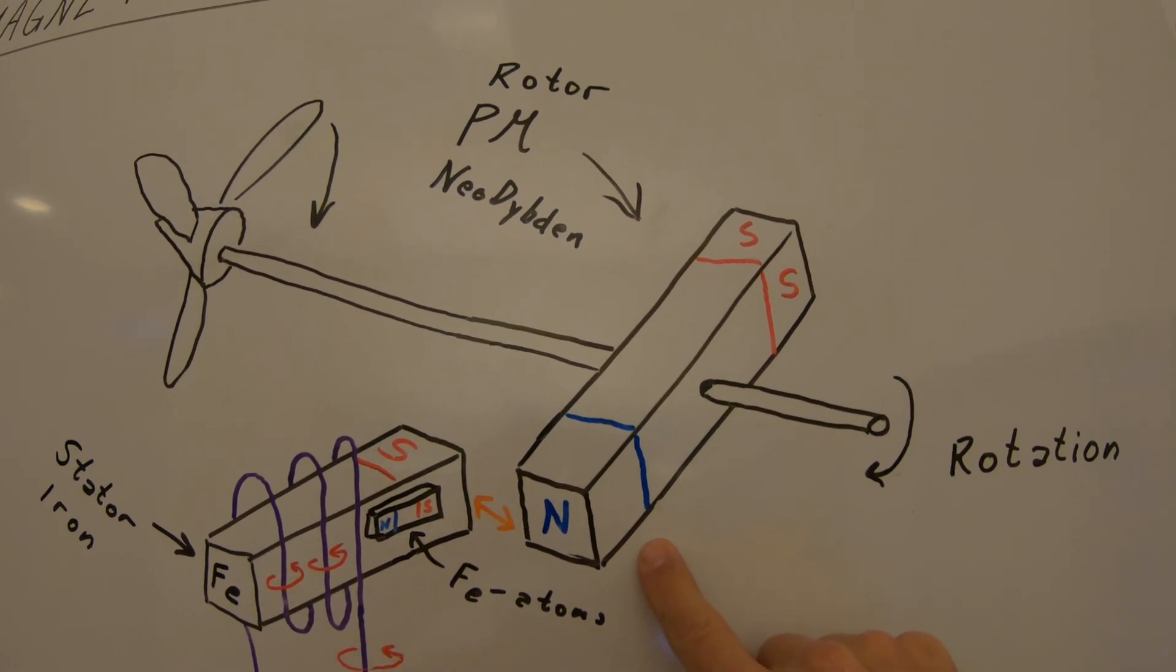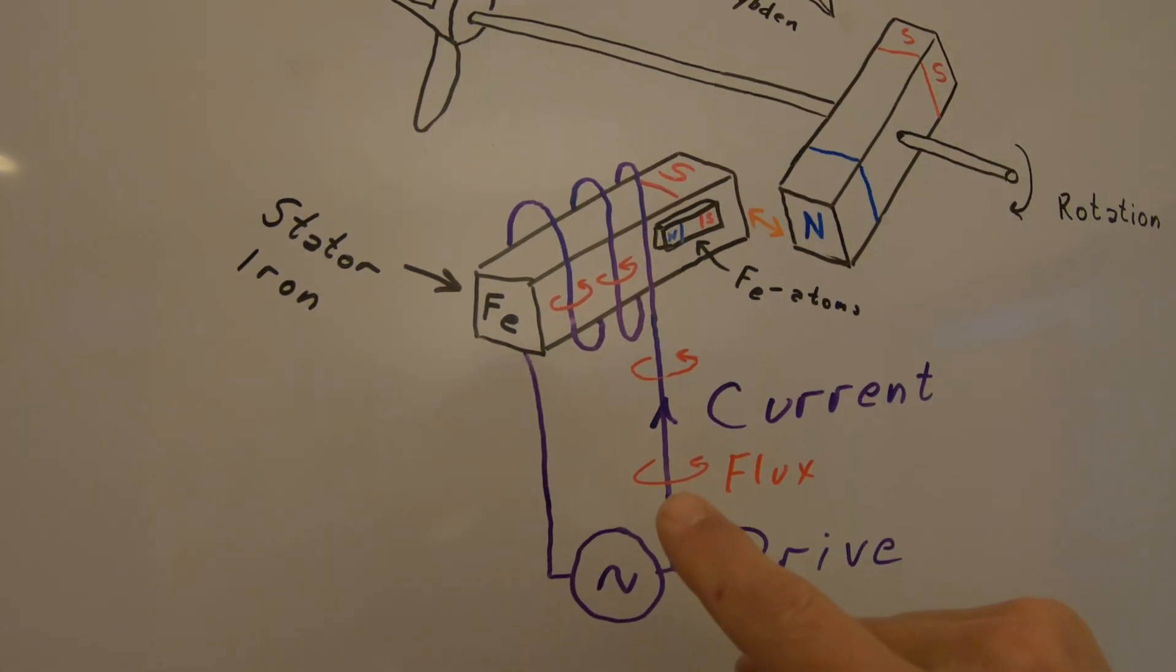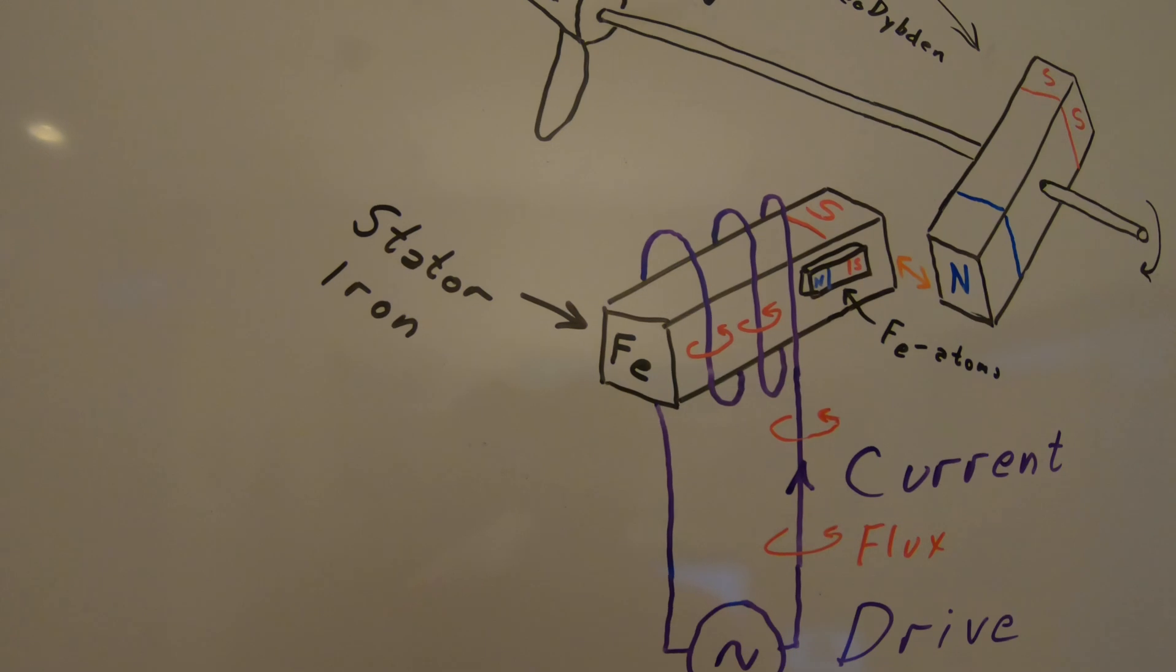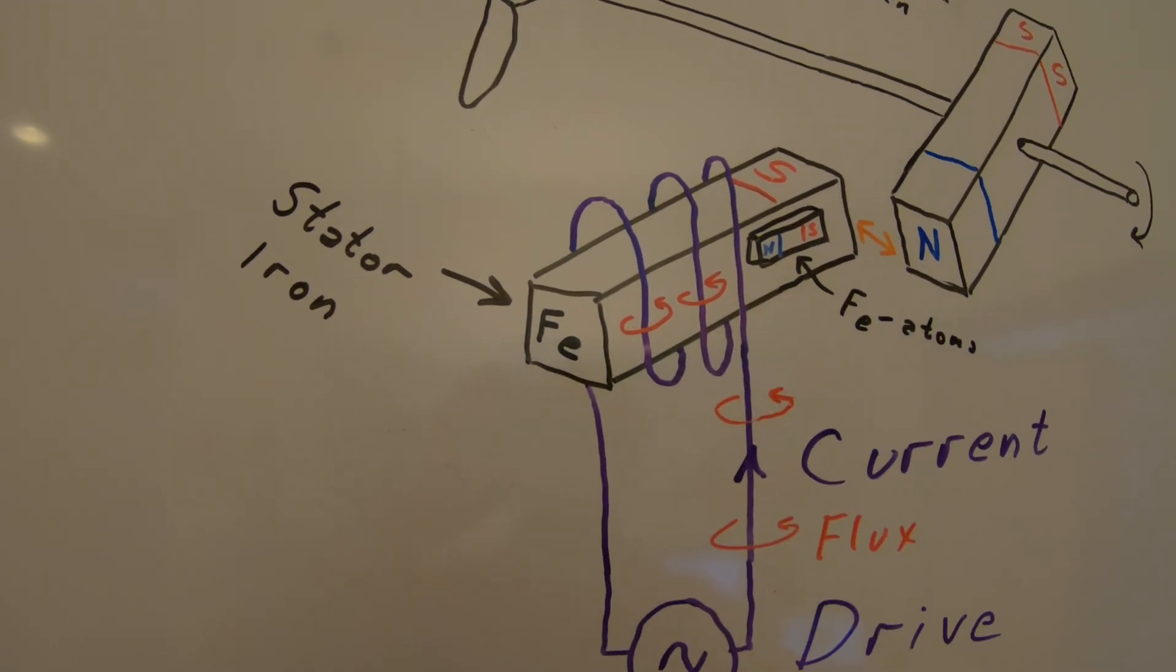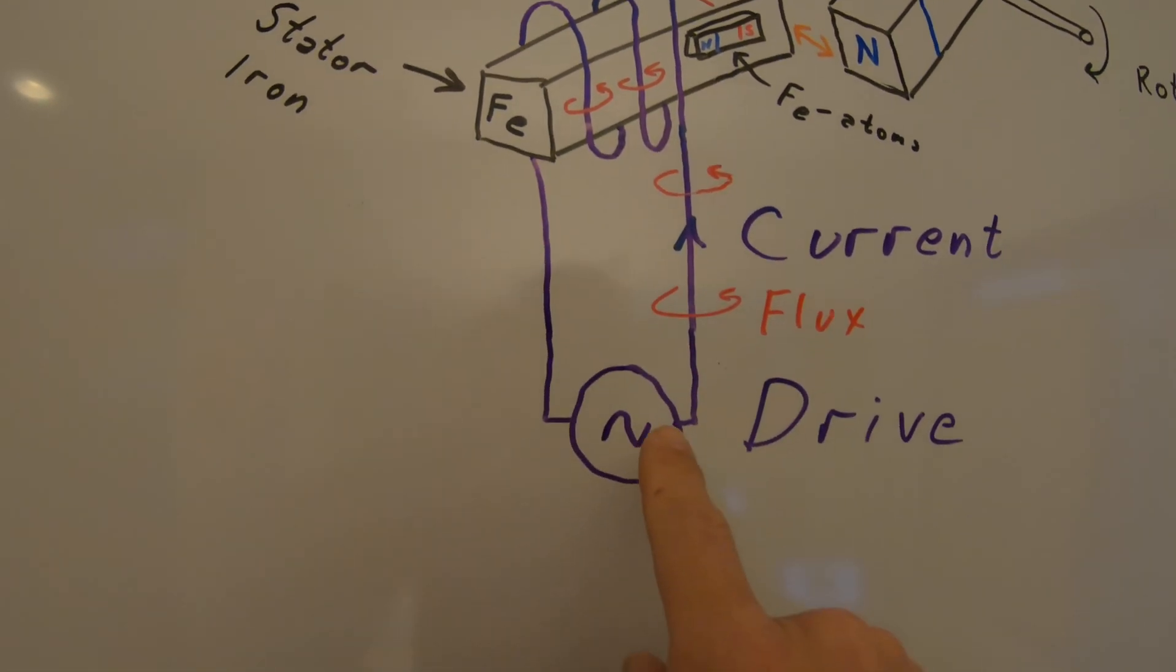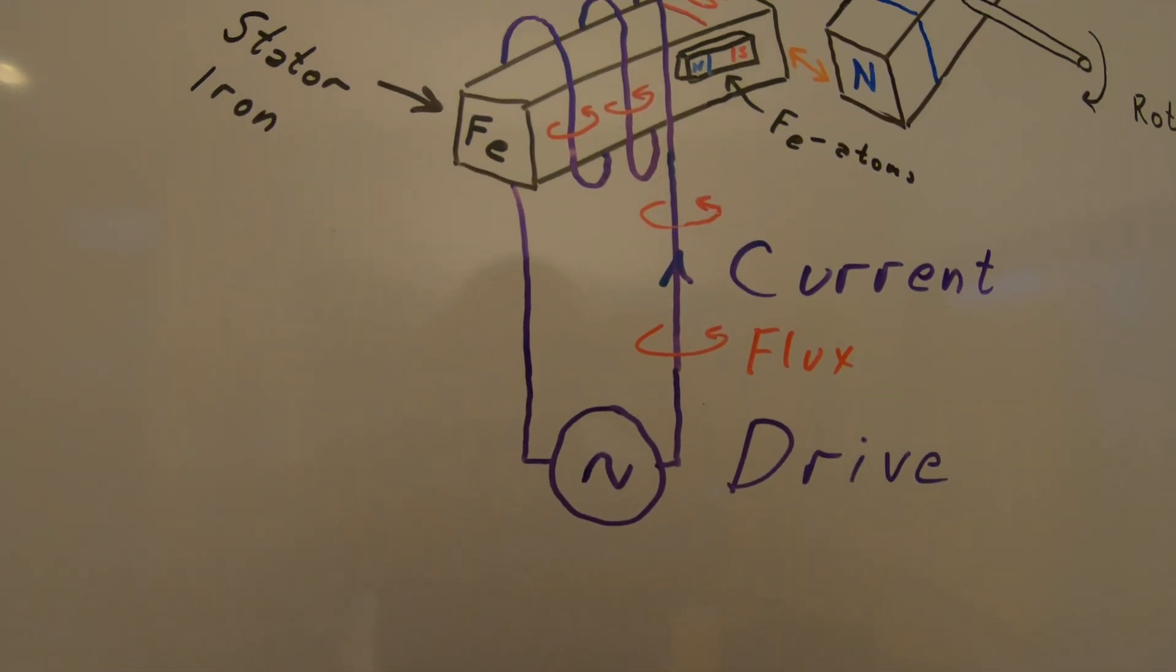Here we have the north pole and the south pole of the magnet. Then we put a piece of iron, we call it the stator. And around this iron we put an electrical winding and this is connected to our frequency converter, a drive, in this case NXP drive.